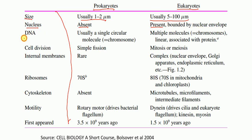Another point is DNA. In prokaryotes, usually a singular circular DNA molecule, chromosome. Whereas in eukaryotes, multiple molecules, chromosomes, linear, associated with proteins, etc.